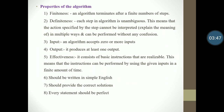Here are some properties of an algorithm. First is finiteness — an algorithm terminates after a finite number of steps; it cannot go into an infinite loop. Second is definiteness — each step in the algorithm is unambiguous; the action specified by the step cannot be interpreted in multiple ways and can be performed without any confusion. Third is input — an algorithm accepts zero or more inputs. Fourth is output — it produces at least one output.